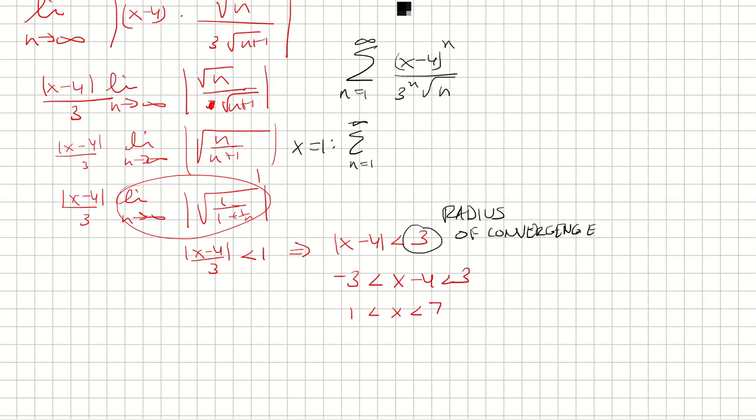We have 1 minus 4 to the nth, so that's negative 3 to the nth power over 3 to the nth times the square root of n, which I can rewrite. Basically you can have negative 3 over 3 to the nth power, which is just negative 1 to the nth over the square root of n. And this converges by the alternating series test because it's decreasing, it's alternating, the limit goes to 0, and so it converges.